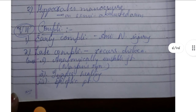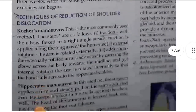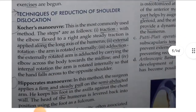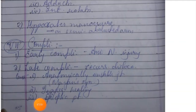Seventh: complications. First, early complications include axillary nerve injury, causing deltoid muscle paralysis and a small area of anesthesia over the lateral aspect of the shoulder.